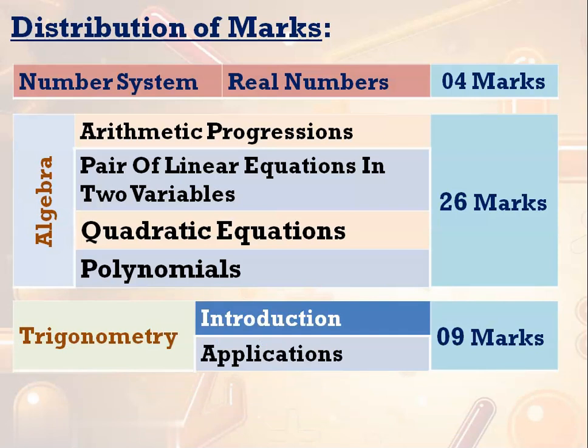The third branch is trigonometry — introduction to trigonometry and applications of trigonometry. Here also 9 marks is allotted. Minimum 3 or maximum 4 marks will go to applications of trigonometry, and the remaining 5 or sometimes 6 marks go to introduction to trigonometry.